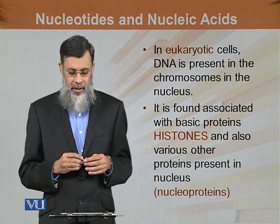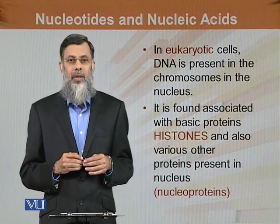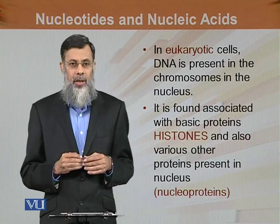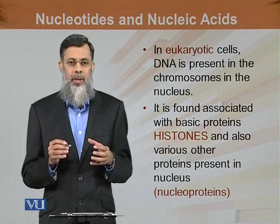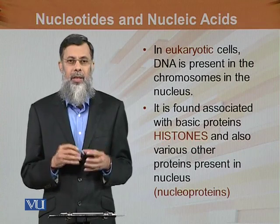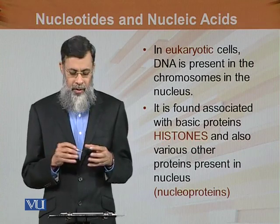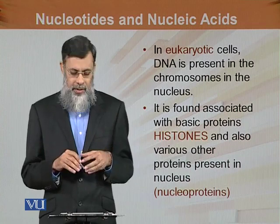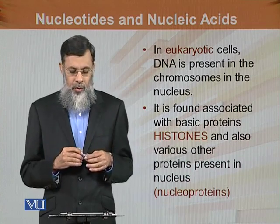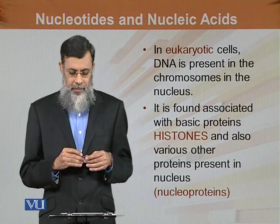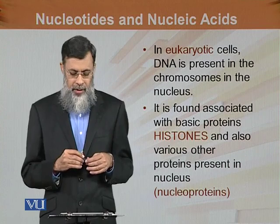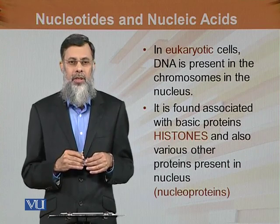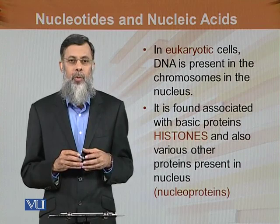In eukaryotic cells, DNA is present in the chromosomes in the nucleus. The nucleus, as we know, is membrane bound. DNA in eukaryotes is in chromosomal form, present in the nucleus. It is found associated with basic proteins known as histones, along with various other proteins present in the nucleus which are known as nucleoproteins.